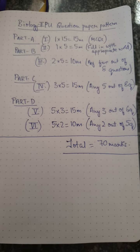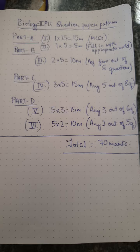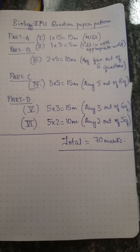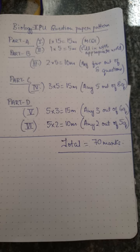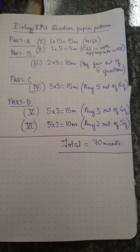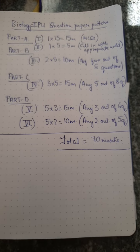Part D consists exclusively of five-mark questions. The fifth Roman numeral: 5 × 3 = 15 marks. You have to answer any three five-mark questions out of six questions.